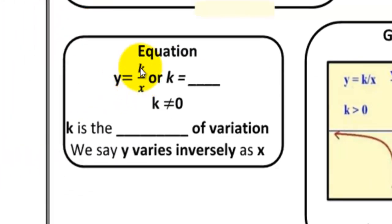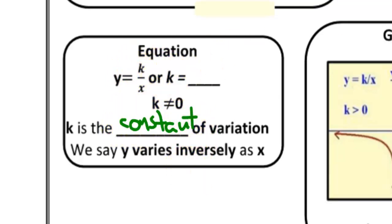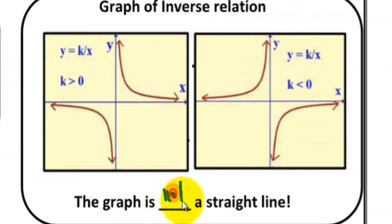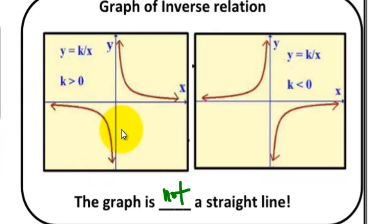Let's take the equation of inverse variation. The equation is y equals k over x. K is the constant of variation. When you solve for K, it will be equal to the product of your x and y. Our constant of variation should not be equal to zero. The graph of inverse variation is not a straight line — this curve will never cross the x-axis, neither the y-axis.